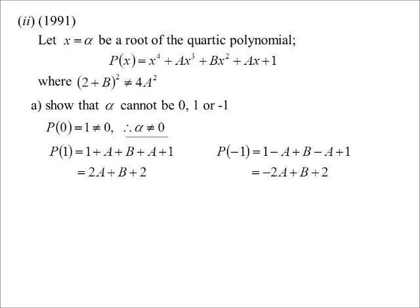This is where this piece of information comes in handy. I know 2 plus B squared can't equal 4A squared. Therefore, 2 plus B cannot equal plus or minus 2A. So, plus or minus 2A plus B plus 2 can't equal 0.